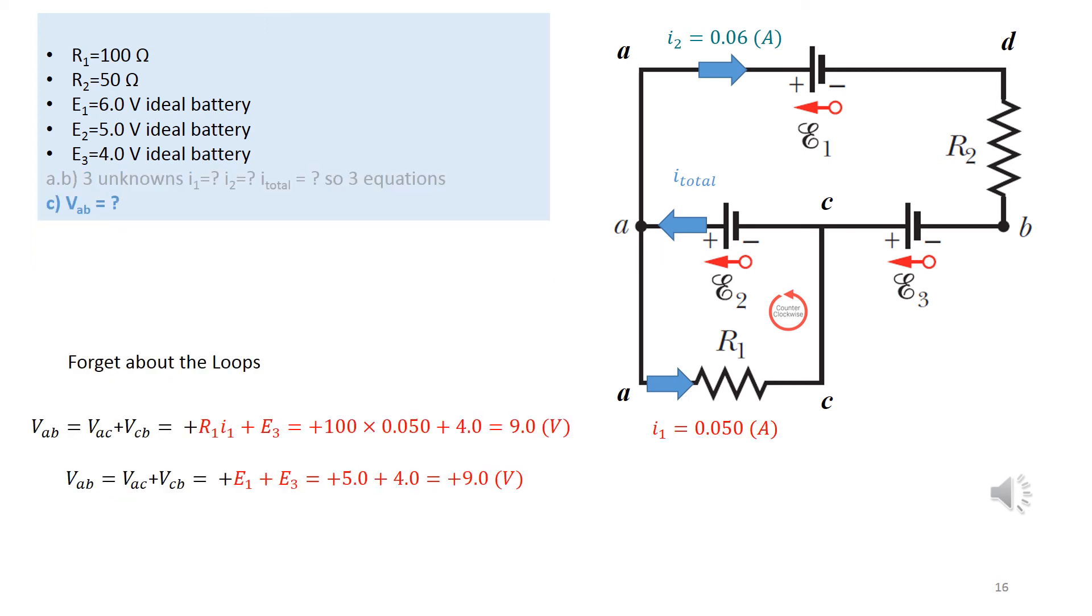When they ask about the voltage between, or the potential difference between two points, don't think about the rules of the loop. Forget about the loops and apply the formula. If, for example, I'm going from A to B, I can go AC then CB. Now AC, is it positive or negative? Since from A to C, I can go either in the battery, which is E2, or in R1 I1.